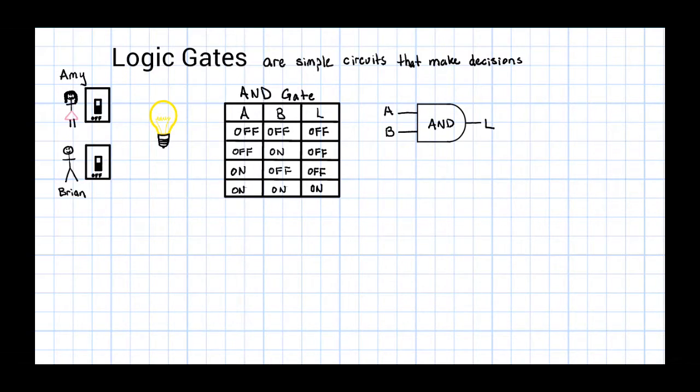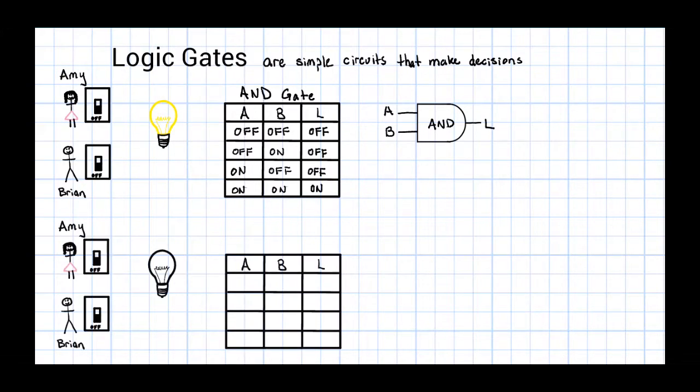Amy and Brian have a second light bulb in their house. This light bulb is also controlled with light switches. However, this light bulb turns on when either Amy or Brian turns their switch on. Again, we'll construct a table to show all possible inputs with their associated outputs.